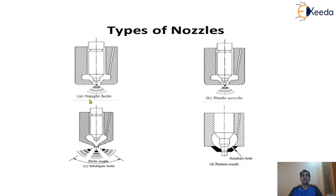In the case of the single hole nozzle, here is the complete assembly of the injector — the body of the injector and the injector system. At the mouth of the nozzle, this nozzle has one single hole. The nozzle is attached at the mouth of the injector and has a single hole through which the fuel comes out and spreads inside the engine cylinder. It is called a single hole nozzle because it consists of a single hole at the tip of the nozzle.